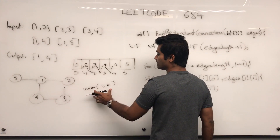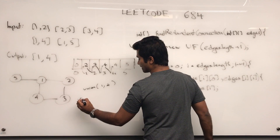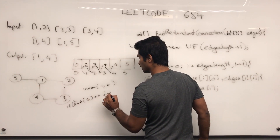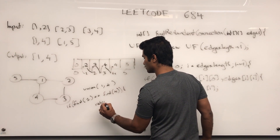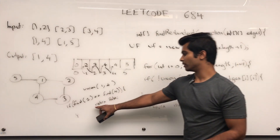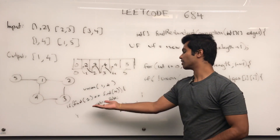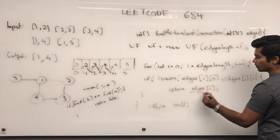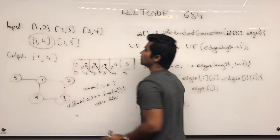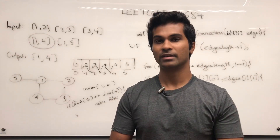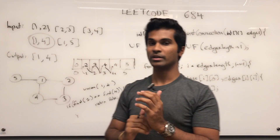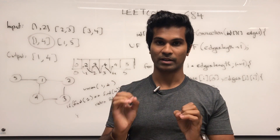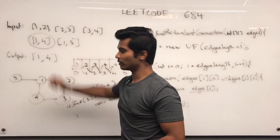When we call union of one and four, the find method gets called. If find of one equals find of four, we return false. This is the first time in our union method that we enter this conditional — it recursively checks until it reaches four. Because we're returning false, the opposite condition is true, and we return whatever edge we're on. To reiterate: we combine nodes into the same connected component every time we encounter an edge. The first time we encounter two nodes that already belong to the same connected component, that's when we return that edge.